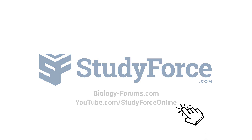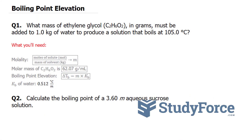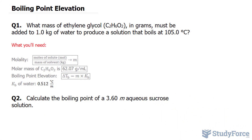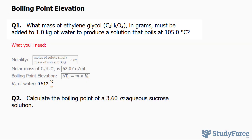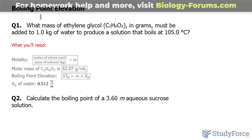In this lesson, we'll be doing two examples on boiling point elevation. The first question reads: what mass of ethylene glycol, the chemical formula shown there, in grams, must be added to one kilogram of water to produce a solution that boils at 105 degrees Celsius? So we're looking for the mass of the solute.